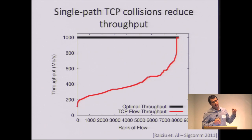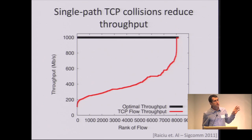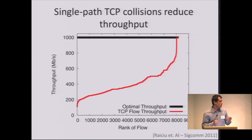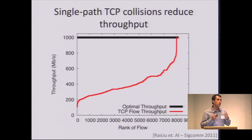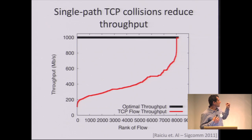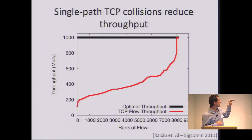How bad is this? I'm showing the output of a single simulation of a data center with a fat-tree network and 8,000 hosts, where every host sends to a single other host — a permutation traffic matrix. The throughput maximum is one gigabit. In theory, the fat-tree network gives every host enough bandwidth for one gigabit per second. But collisions make it so bad that — as shown by the red line — most flows get around 300-400 megabits, with some unlucky ones getting as low as 100 megabits.